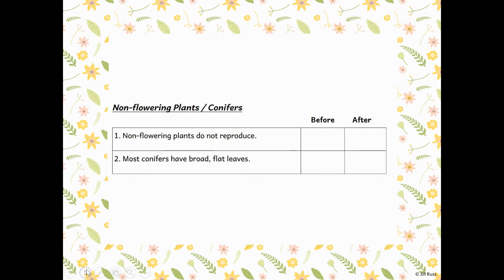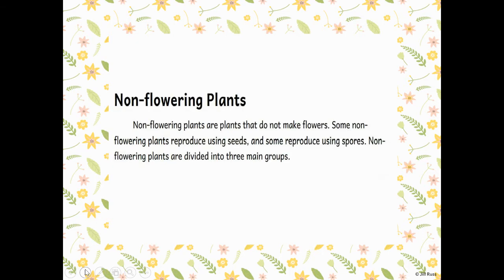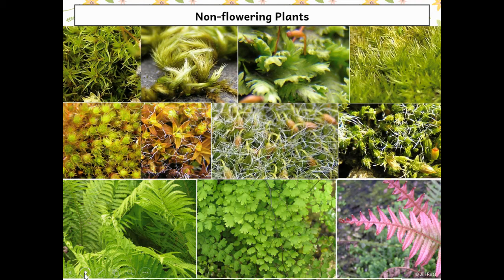Now let's dive in and read about non-flowering plants. Non-flowering plants are plants that do not make flowers. Some non-flowering plants reproduce using seeds and some reproduce using spores — there's our answer to the true/false question. Yes, they do reproduce; they use seeds or spores. Non-flowering plants are divided into three main groups and we're going to learn about one of those groups today. Here are some pictures of non-flowering plants — you can see there are no flowers on them. There's a fern down here, and this is a cilantro plant.